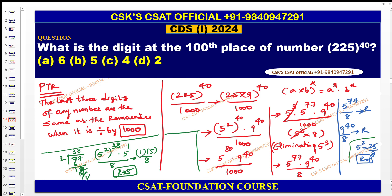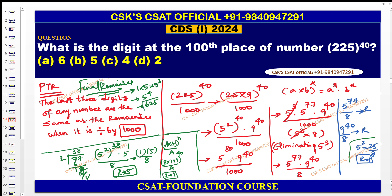For 9⁴⁰ ÷ 8: write 9 = 8×1 + 1, which is in the format (ax + 1)ⁿ ÷ a. The remainder is 1. So the combined remainder of 5⁷⁷ × 9⁴⁰ ÷ 8 is 1 × 5 = 5. Now multiply back the eliminated 5³: final remainder = 5 × 5³ = 5⁴ = 625. The hundreds digit of 625 is 6. So the answer is 6 — confirmed by Method 4 as well.